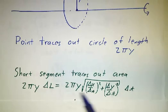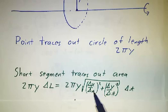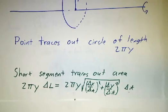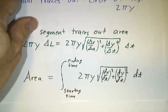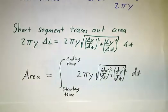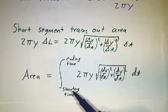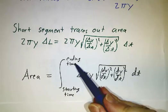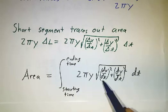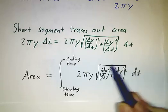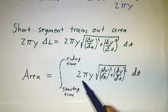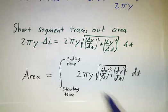And we just saw that Δl was √((dx/dt)² + (dy/dt)²) times Δt. So if you want to figure out the surface area of the surface of revolution, you integrate from your starting time to your ending time. It's the formula that looks just like the formula for arc length but with an extra factor of 2πy in front.